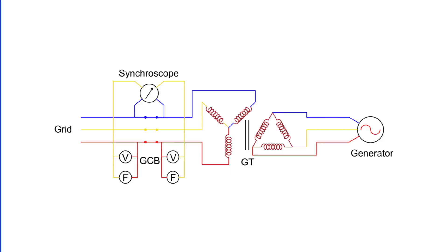However, if the generator's frequency is lower than the grid frequency and the breaker is closed, the grid will force the generator to match its synchronous speed. In this case, the generator will act as a synchronous motor, consuming active power from the grid. This improper synchronization results in reverse power flow and can lead to motoring of the generator. Both causes underline the importance of maintaining reliable control systems and following correct synchronization procedures to prevent reverse power conditions.